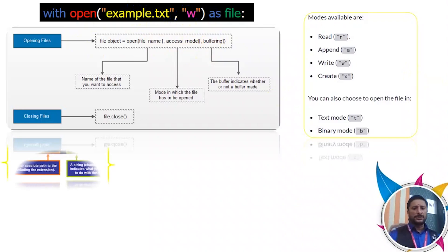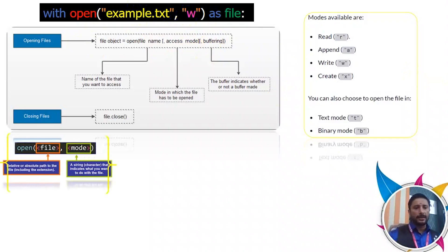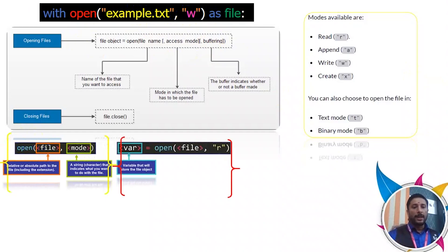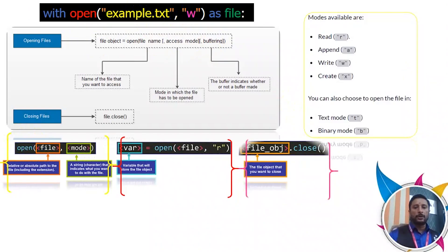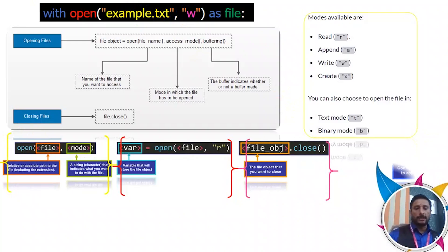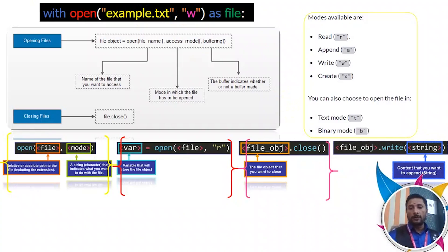To open a file, you use the open function. You also specify a mode — for example, R is for reading. To close the file, you use file.close(). To write to the file, you use the write function.